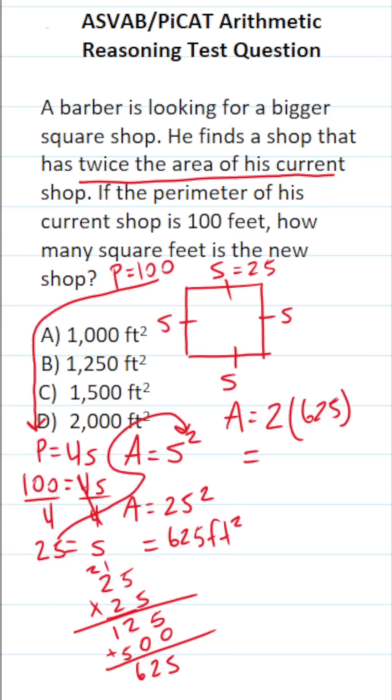Let's go ahead and do this off to the side so as not to make any mistakes. We have 625 times 2. 5 times 2 is 10, carry a 1. 2 times 2 is 4, plus 1 is 5. 6 times 2 is 12. So the area of his new shop is going to be 1,250 square feet.